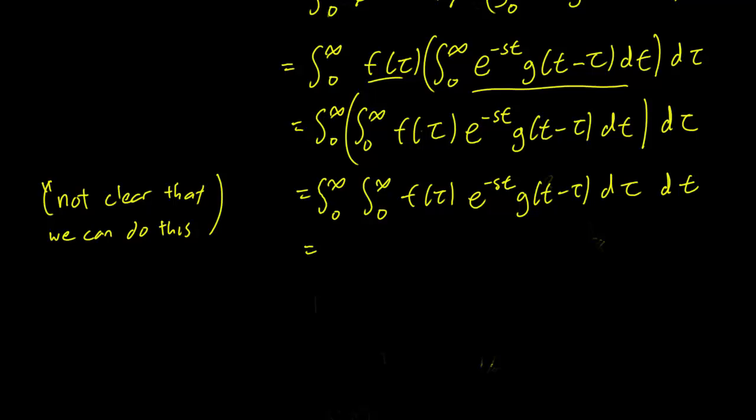But we made the switch, and now the thing to notice is that e^(-st) is now a constant with respect to τ. So this is the integral with respect to τ now, and e^(-st) is a constant. So we can pull it out of the inside integral, and we have integral e^(-st) integral f(τ) g(t-τ) dτ dt.